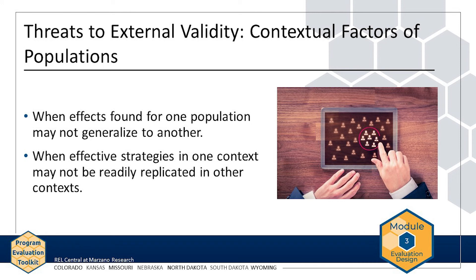Consider again the AMP example. Let's say that AMP was implemented 15 years ago in a large urban district in the Northeast United States. What if leaders in a rural district wished to implement AMP today? The leaders should be very careful in generalizing conclusions from the original AMP to the rural district, because the time and place are so different. The strategies that were implemented effectively in the original context may not work in the second context.